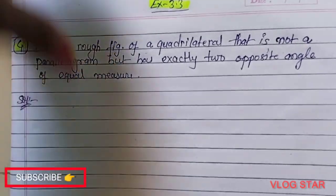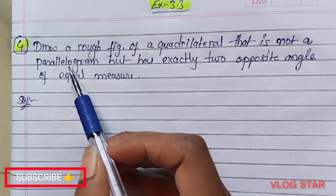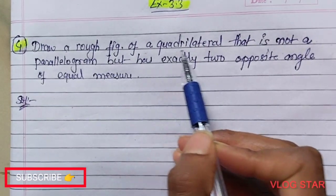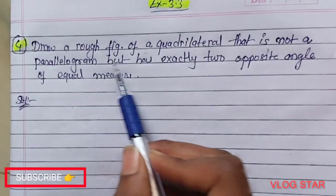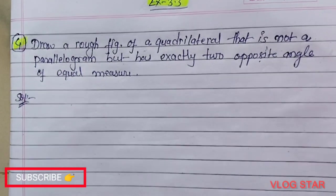Hello, welcome. Let's discuss Class 8 Exercise 3.3, question number 4. Question number 4 is: draw a rough figure of a quadrilateral that is not a parallelogram but has exactly two opposite angles of equal measure. This means two opposite angles are equal, but it is not a parallelogram.